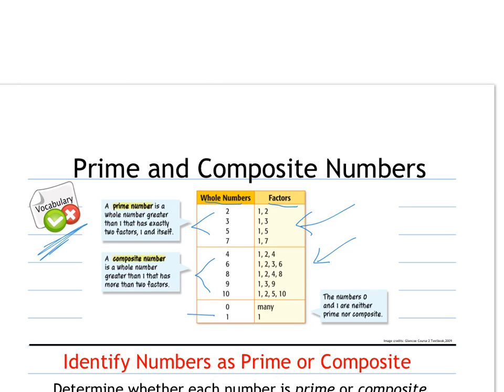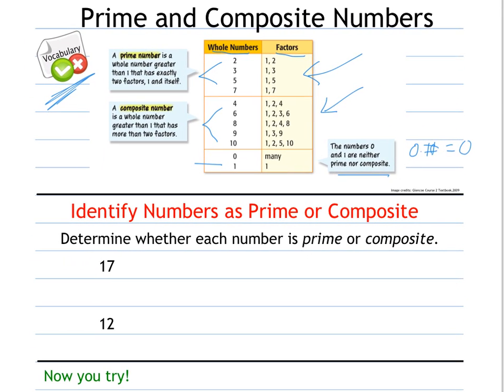0 and 1 are considered neither prime nor composite. 0 has many factors, you could do 0 times any number and you get 0. And 1 can only be multiplied by itself.